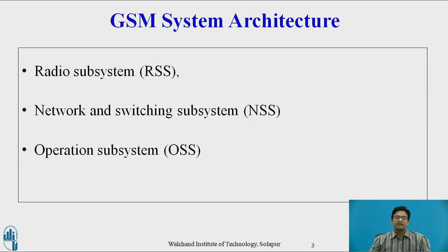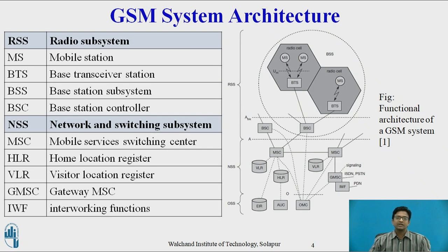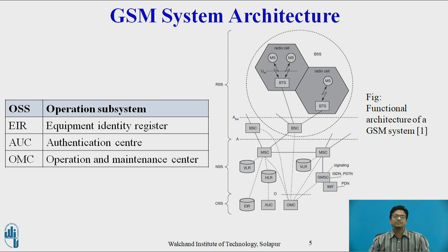The GSM System Architecture is divided into three parts. First is Radio Subsystem, second is Network and Switching Subsystem, and third is Operation Subsystem, i.e. OSS. The diagram shows the Functional Architecture of GSM System. The Radio Subsystem consists of MS, BTS, BSS, and BSC. The Network Switching Subsystem consists of MSC, HLR, VLR, GMSC, and IWF. OSS consists of EIR, AUC, and OMC.